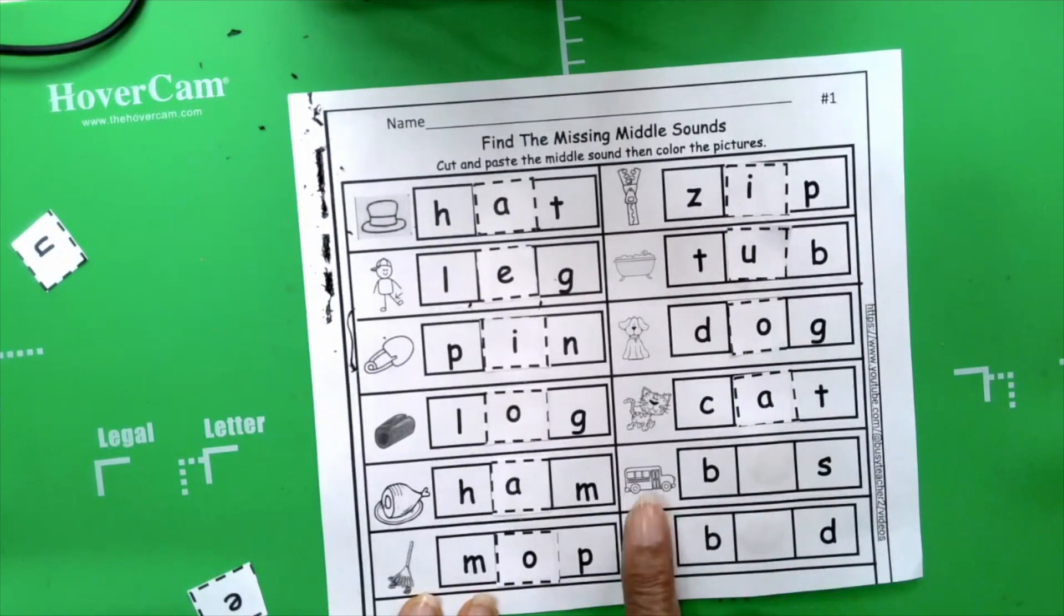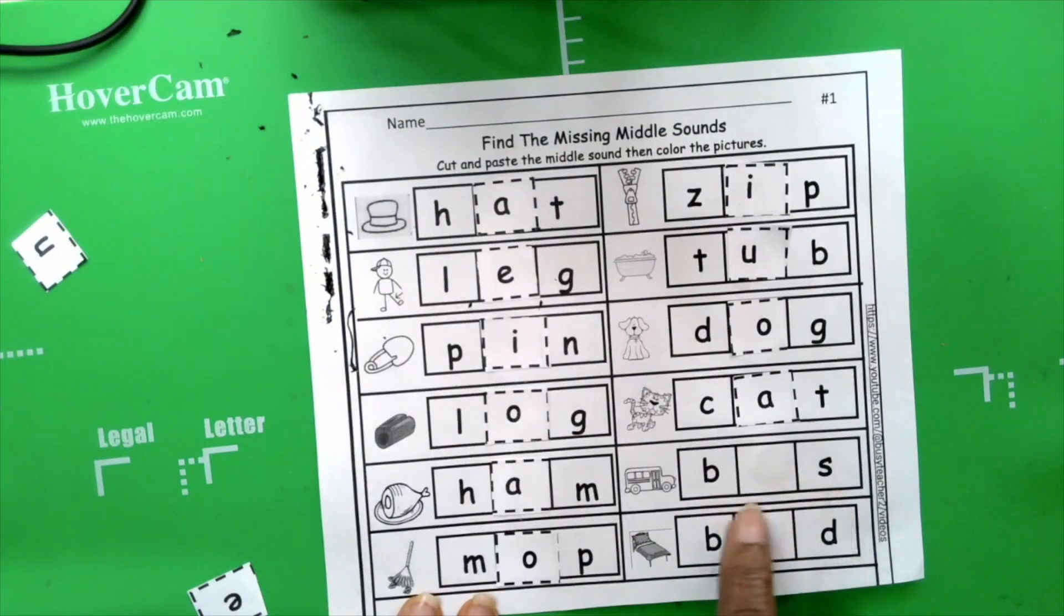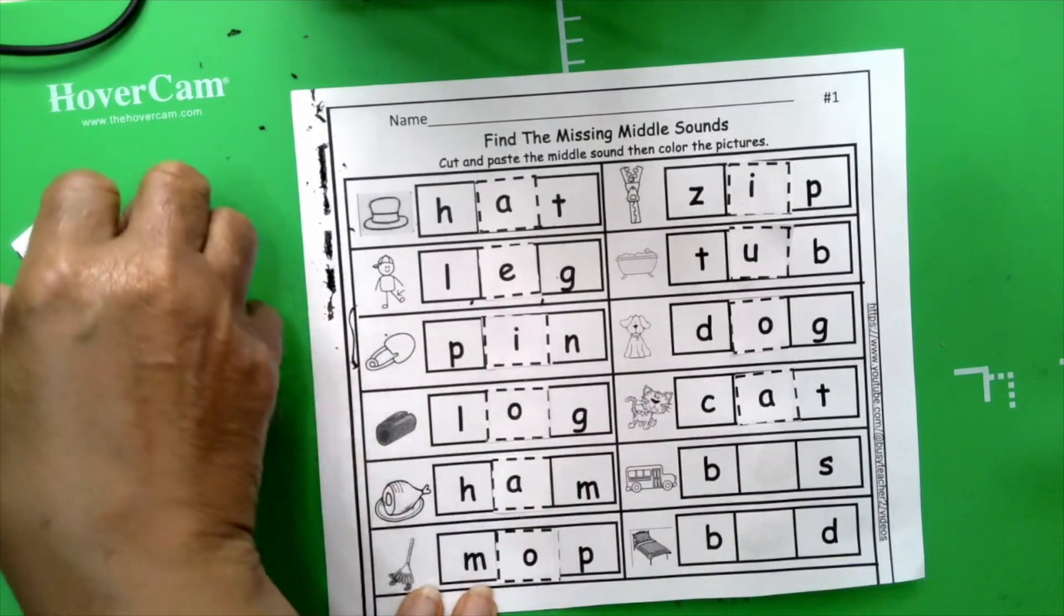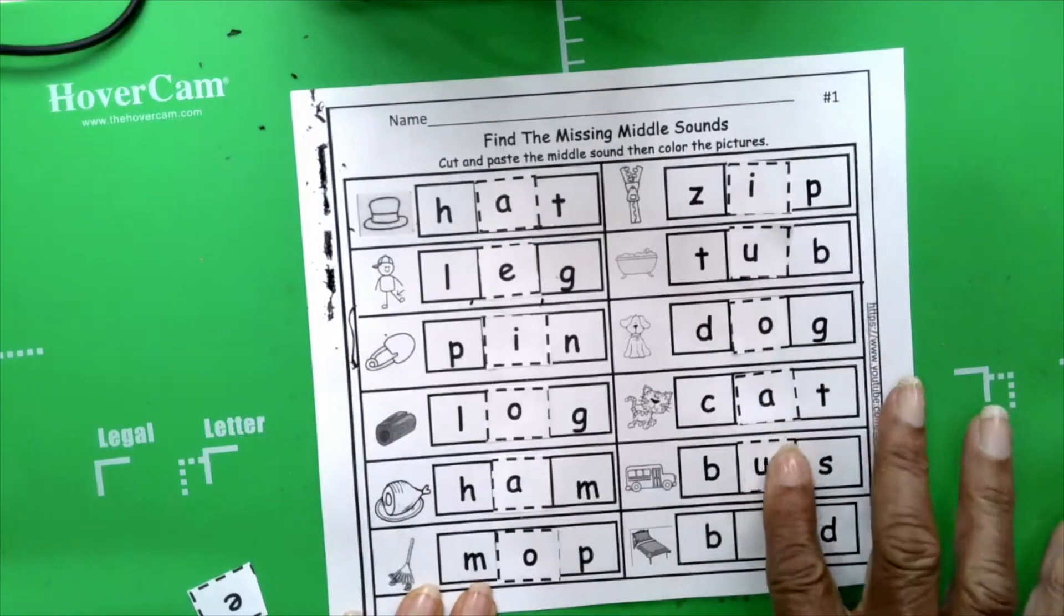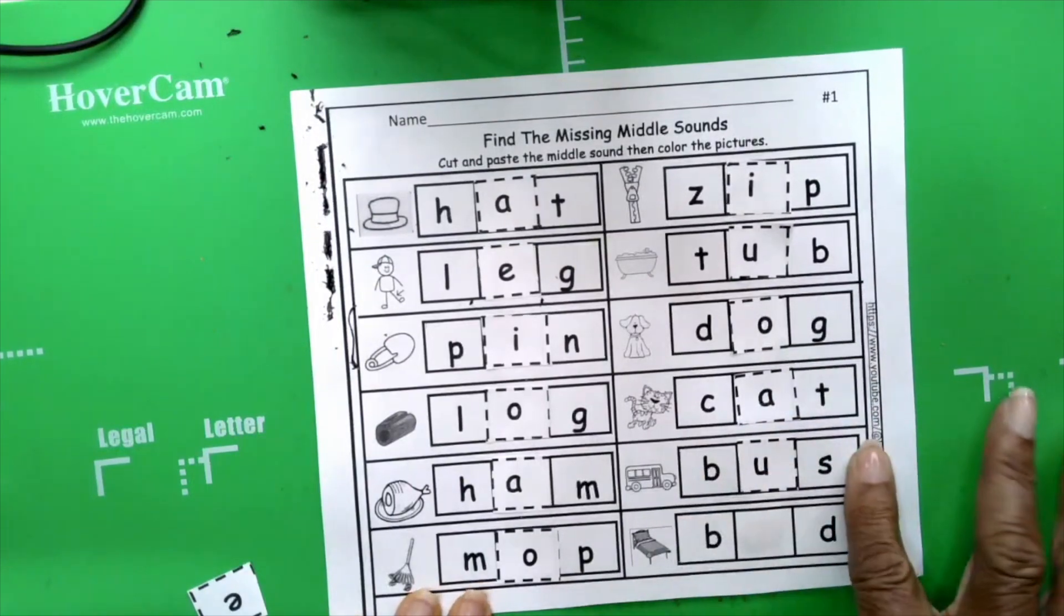Bus, bus, b, uh, s, bus, uh, what's the uh sound, u, u, bus, b, u, s, b, u, s, bus.